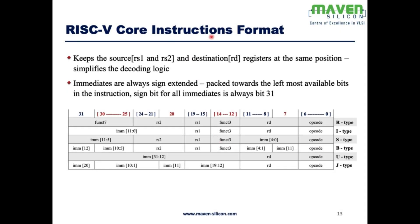RISC-V instruction format. There are six instruction types: R, register type; I, immediate type; S, store type; B, branch type; U, upper immediate type; and J, jump type.